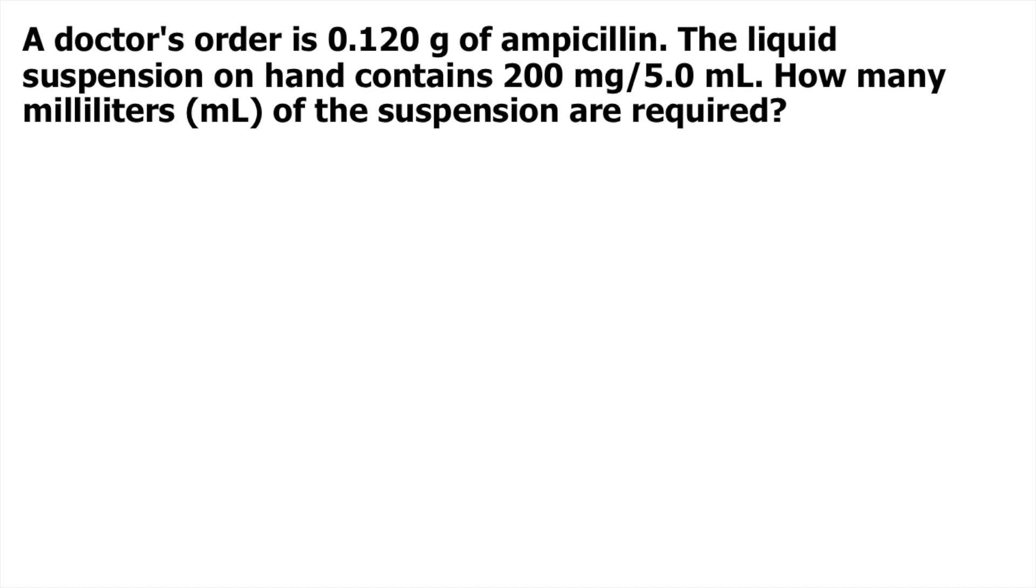In this problem, we are given 0.120 grams of ampicillin. Let's write that: 0.120 grams. The first step is to convert grams into milligrams. Why? Because our other given is in milligrams - 200 milligrams per 5 mL. We need the units to be consistent.